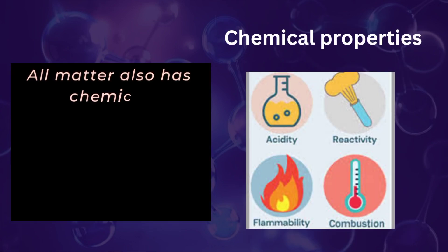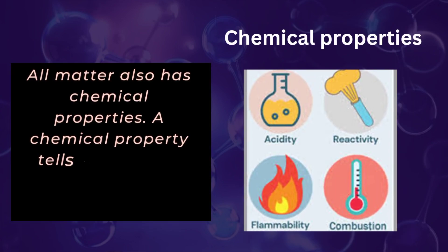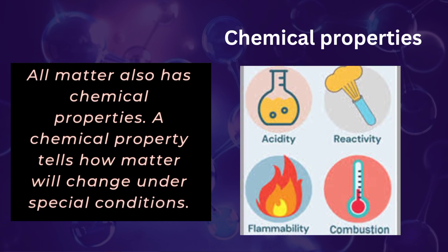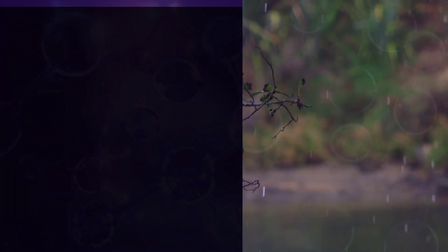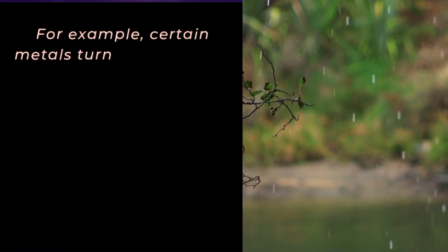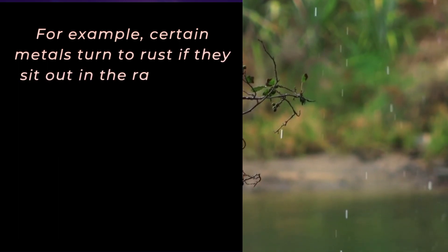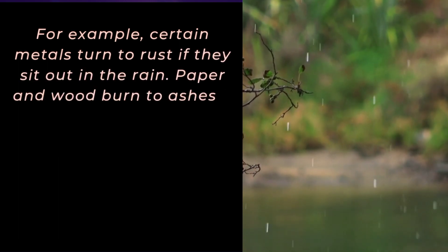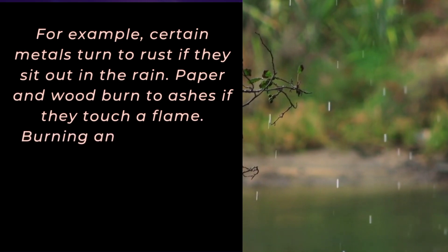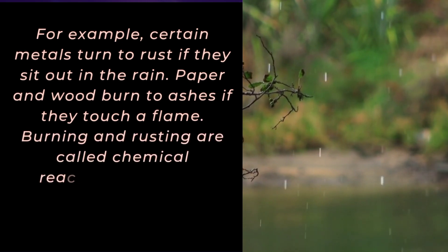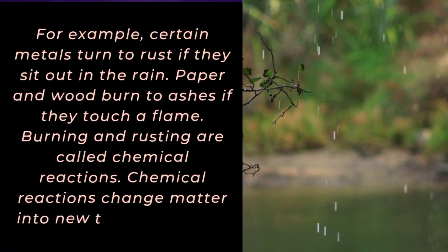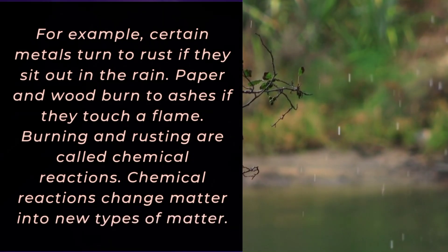All matter also has chemical properties. A chemical property tells how matter will change under special conditions. For example, certain metals turn to rust if they sit out in the rain. Paper and wood burn to ashes if they touch a flame. Burning and rusting are called chemical reactions. Chemical reactions change matter into new types of matter.